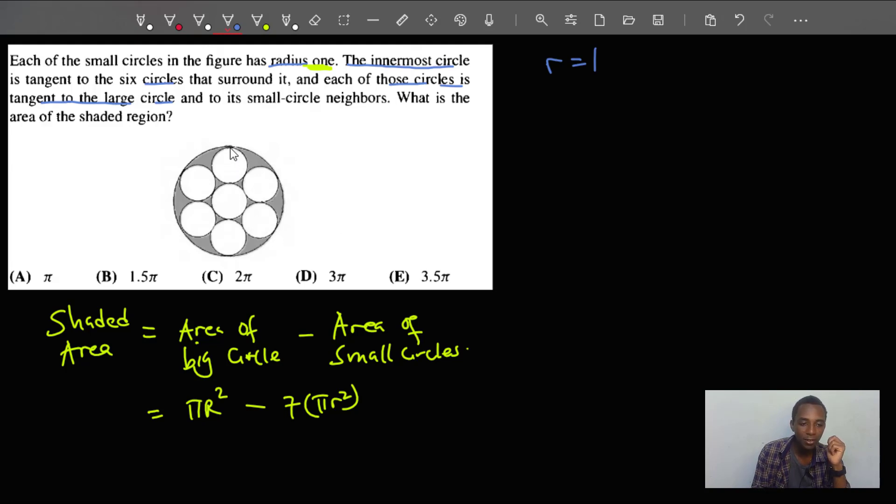So the radius of each of the small circles is one unit. And then for the big circle, as you can see, the diameter of one small circle is two units plus one unit. Of course, this is the center. So two units plus one unit, we'll get three units.